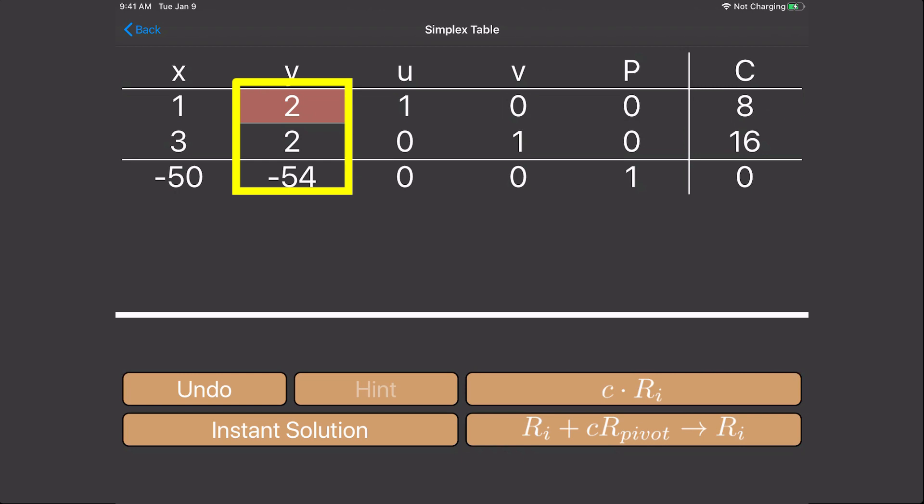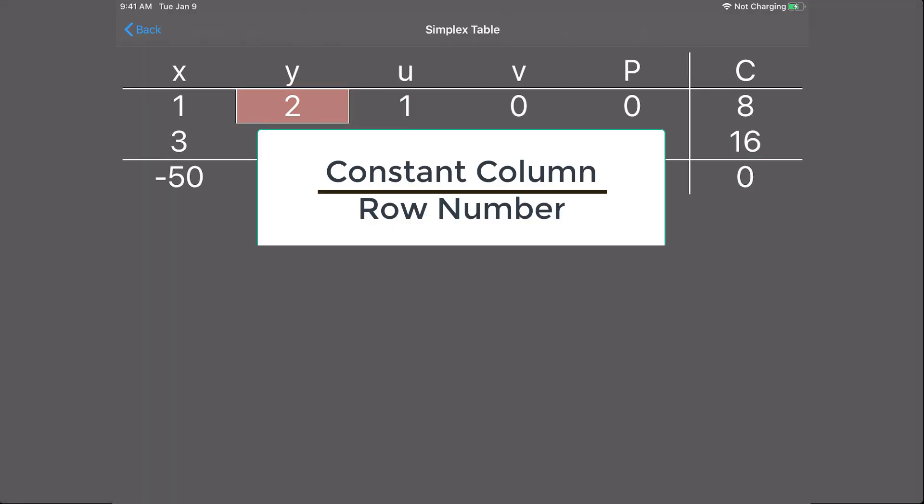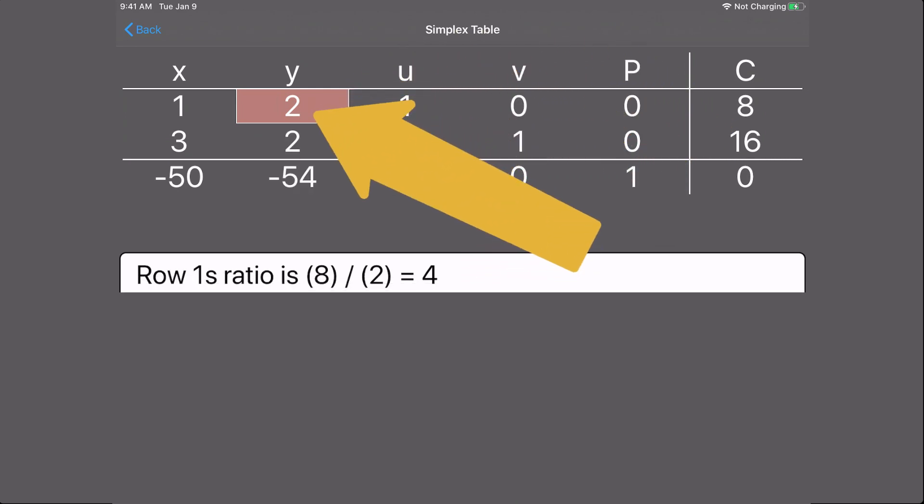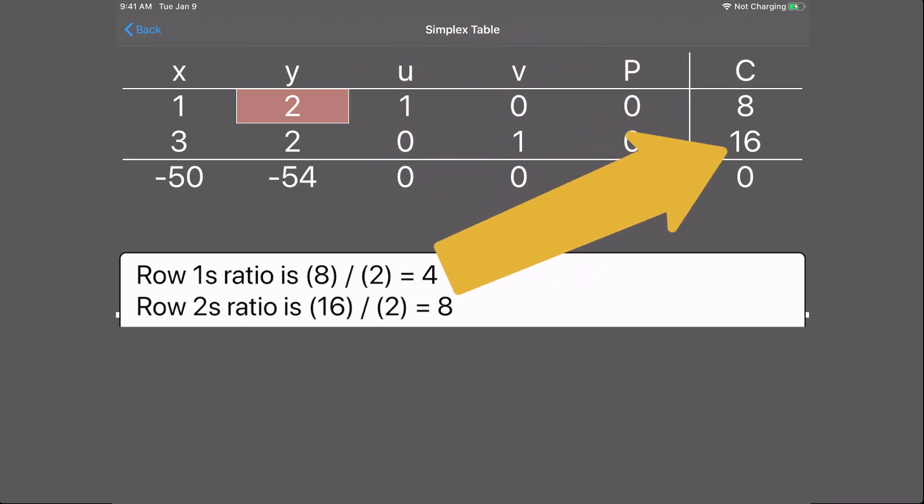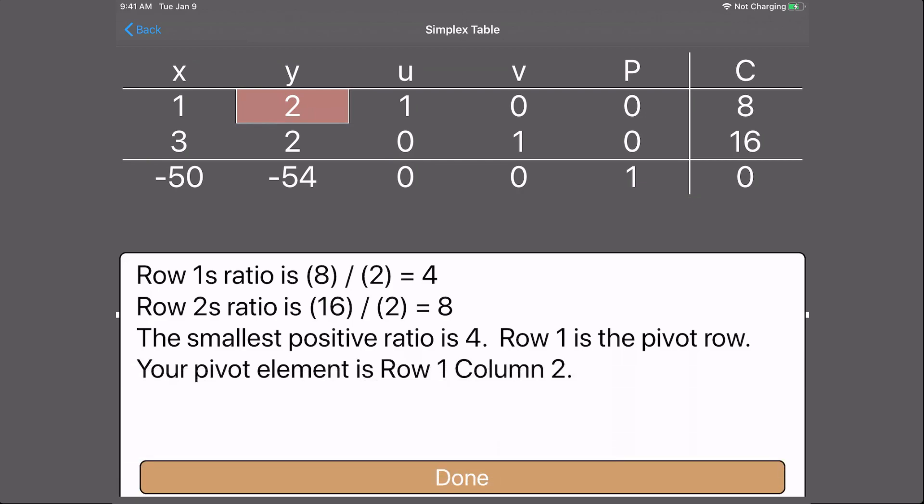Now we need to determine which row we use. We do this by calculating the constant column number divided by the row number. For row 1, that's 8 divided by 2 equals 4. Now row 2, it's 16 divided by 2 equals 8. The pivot row will be the row with the smallest positive, and positive is important, positive ratio. This means our pivot element is in row 1, column 2.